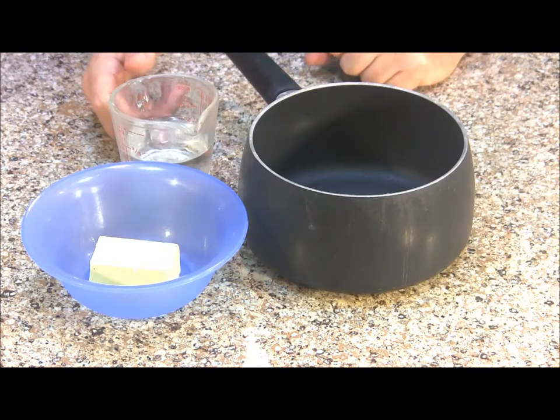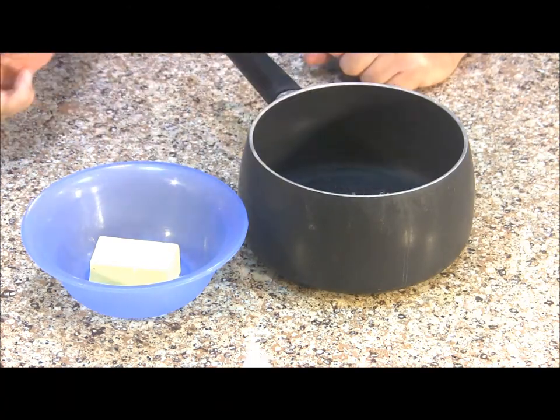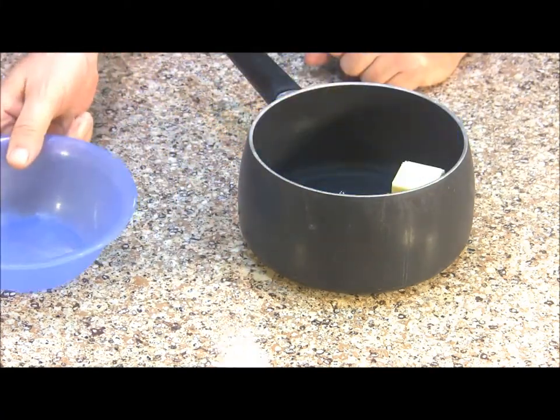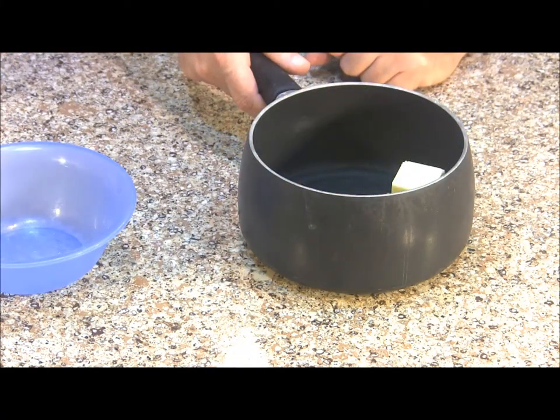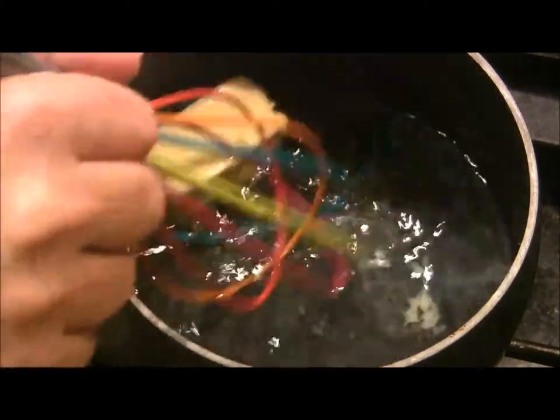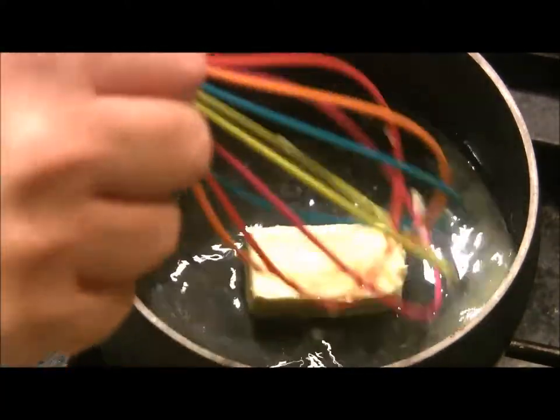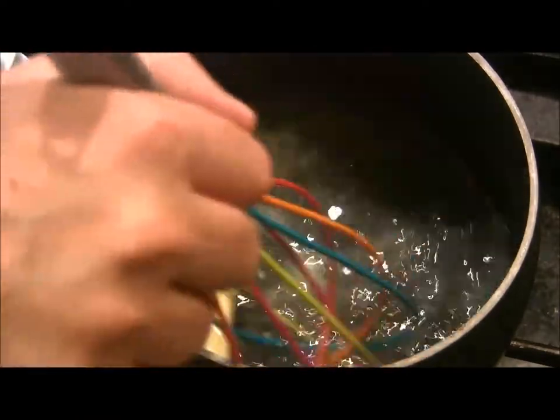First to a saucepan we're going to add our half a cup of water and our quarter cup of butter and we'll take this over to the stove. We're going to cook our butter and water over medium heat until our butter is all melted and it comes to a boil.